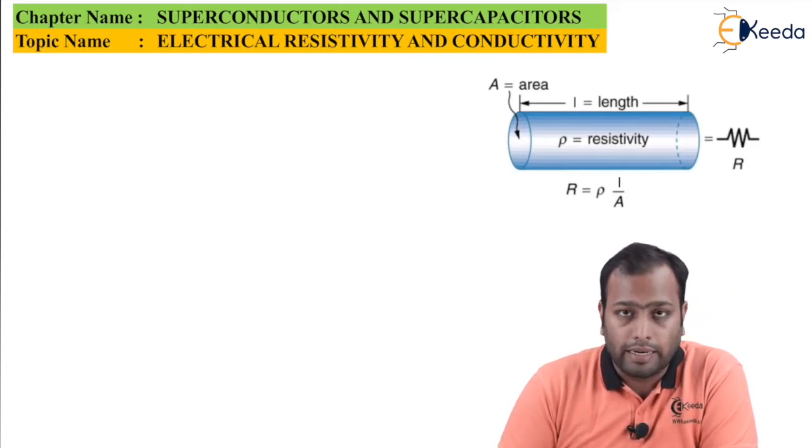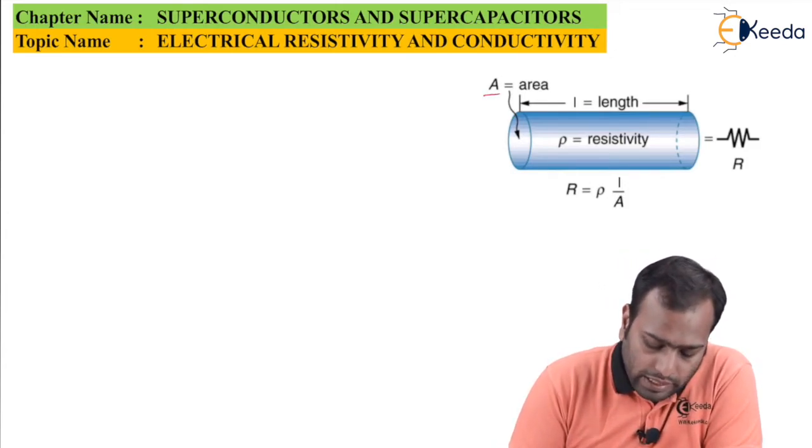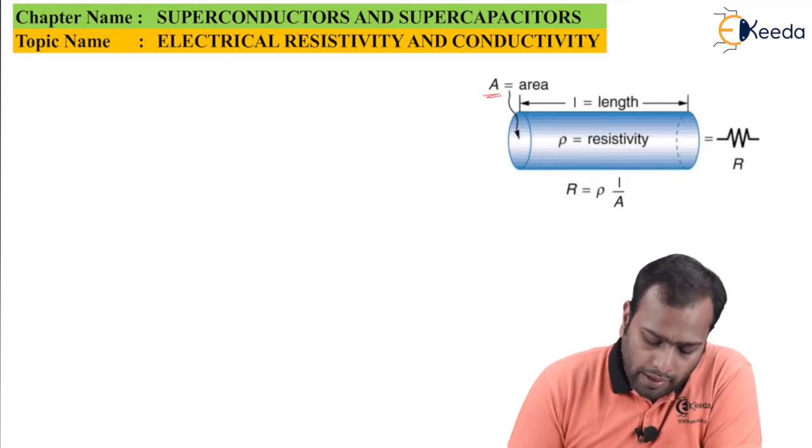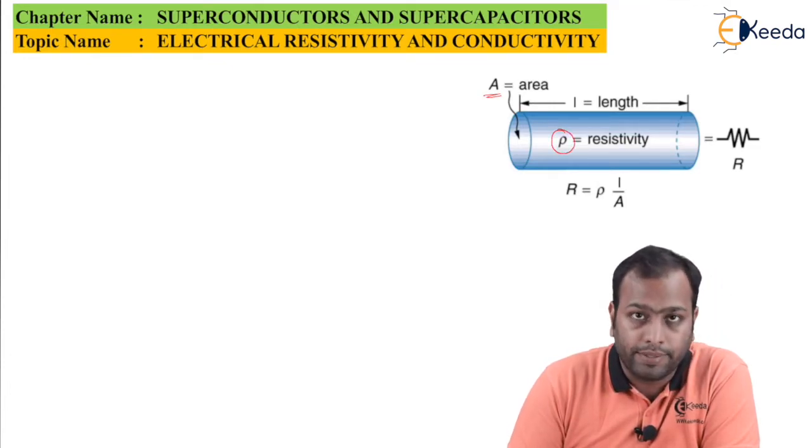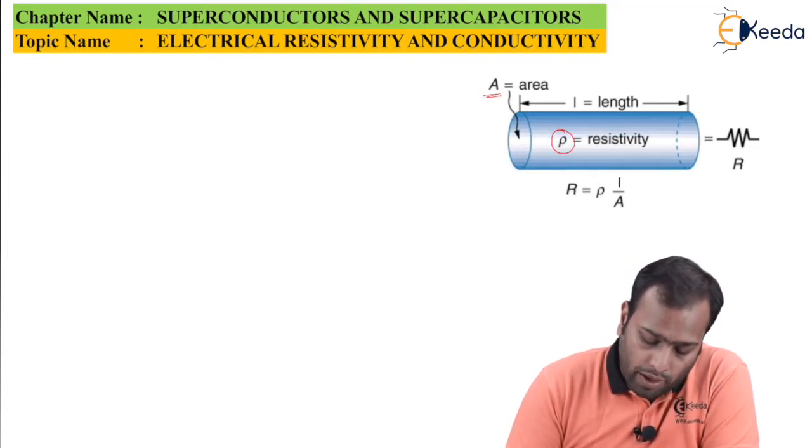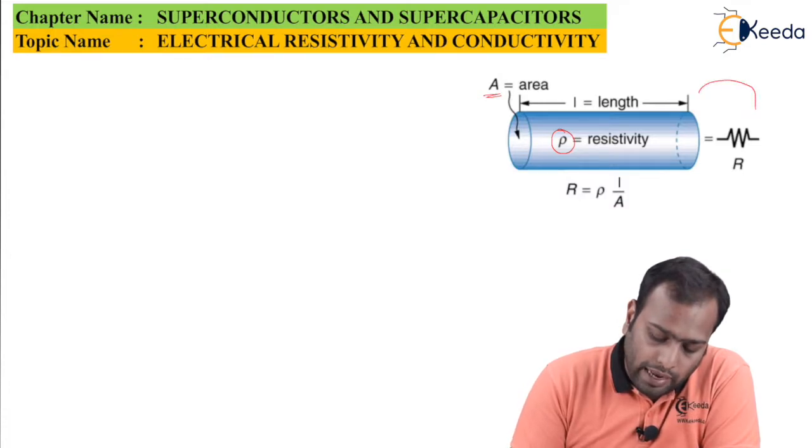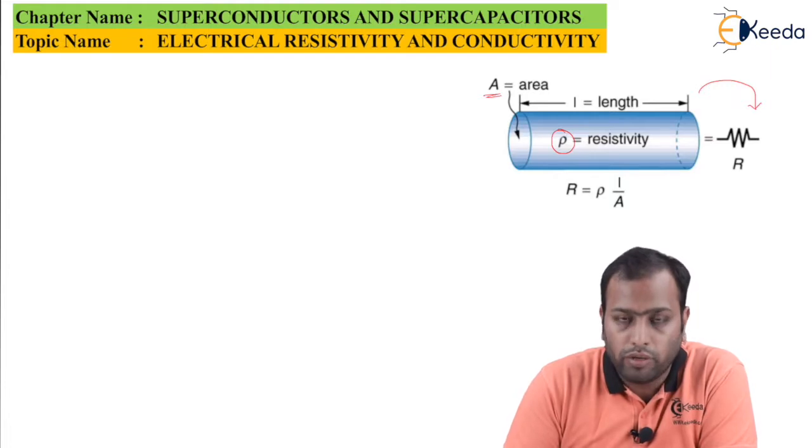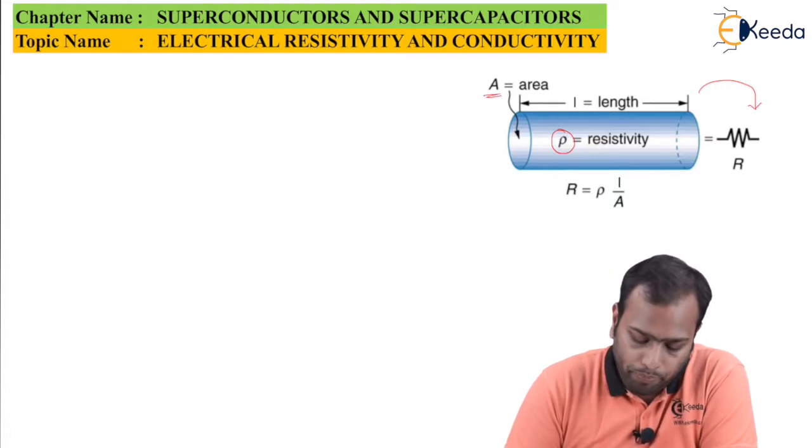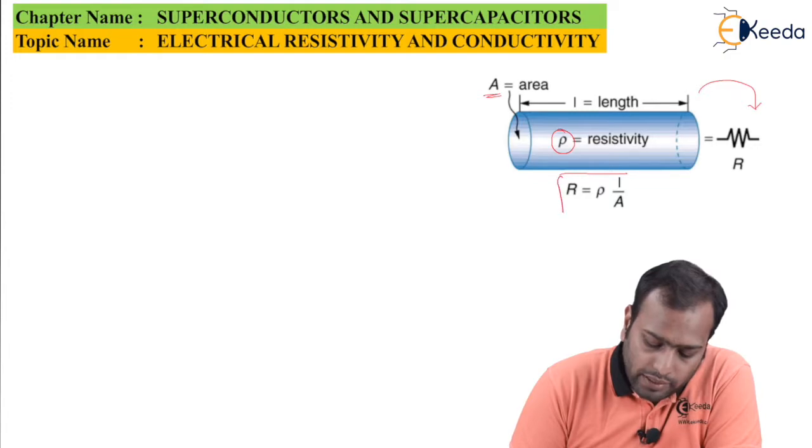Let us assume a conductor having cross sectional area A and length L as shown here. Let rho be its resistivity. This conductor can be equivalent to a resistance which we denote with this symbol. We are going to derive how this relation comes into picture.